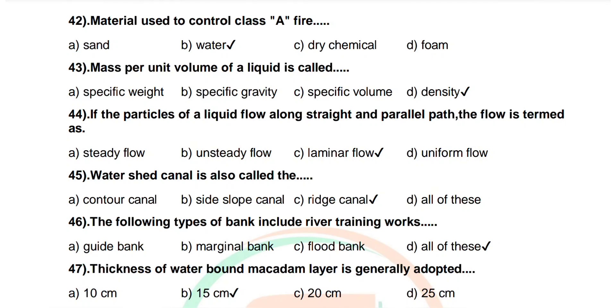Question number 44: If the particles of a liquid flow along straight and parallel path, the flow is termed as. Options are steady flow, unsteady flow, laminar flow, uniform flow. Correct answer: laminar flow.